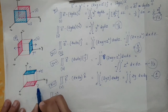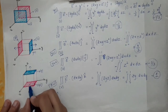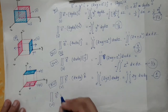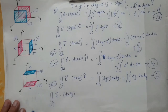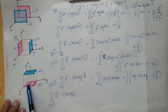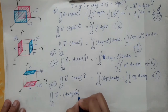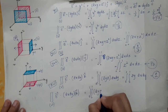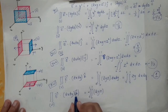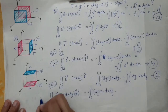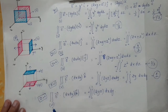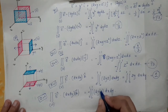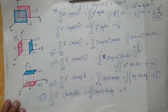For surface 6 (the bottom face), z = 0 and the area vector points in the −k̂ direction, so dS = dx dy (−k̂). Substituting z = 0 into the z-component 2yz makes the entire term vanish. Therefore the surface integral over the sixth surface equals 0.